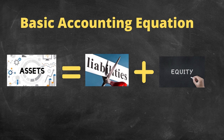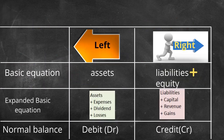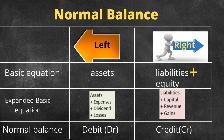This is the basic accounting equation: assets equals liabilities plus equity. This is the normal balance of the equation. In the basic equation, the normal balance for assets is debit — it is on the left side. Liabilities and equity are on the right side, or credit.